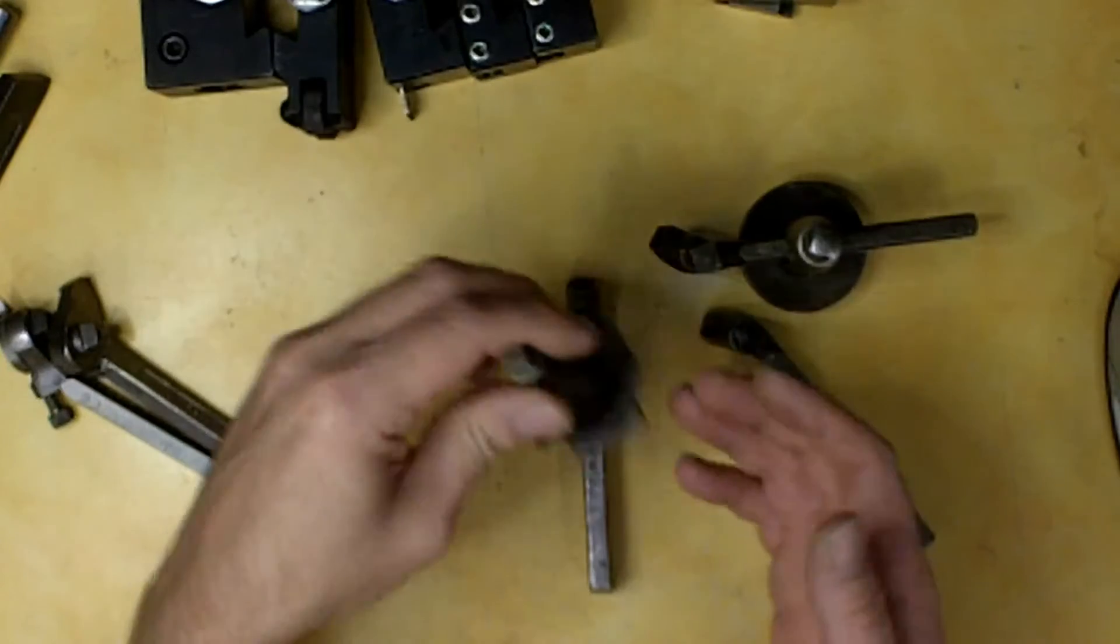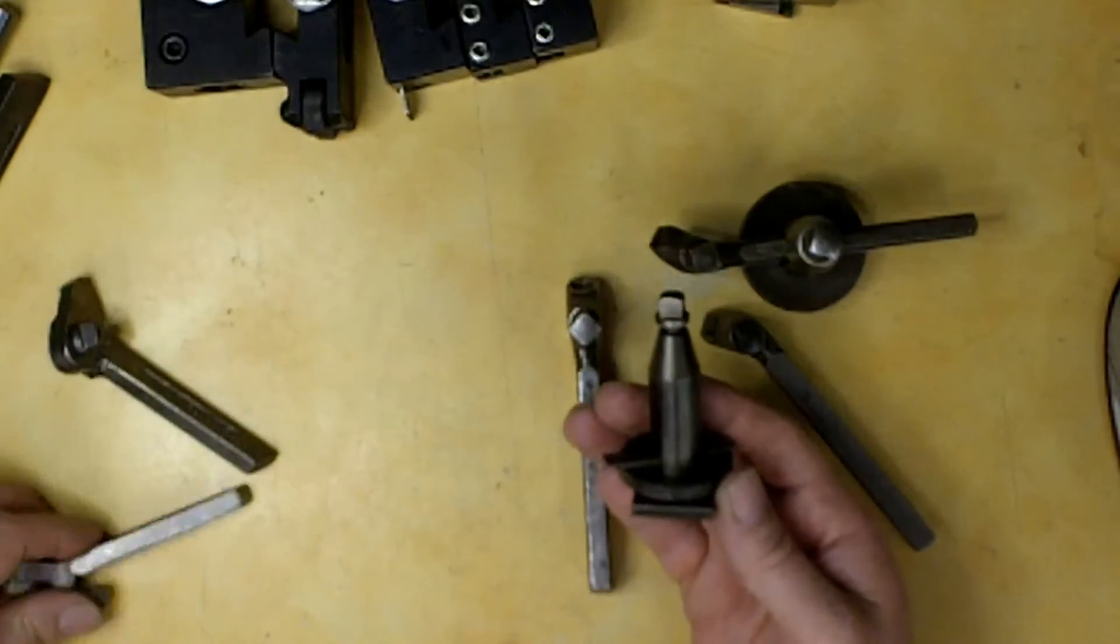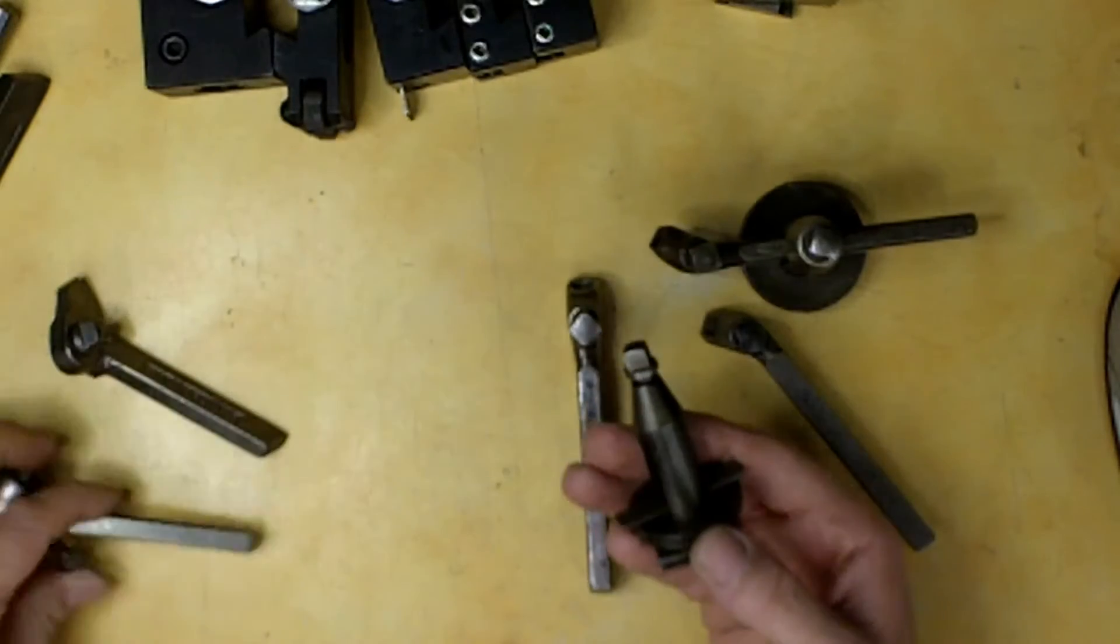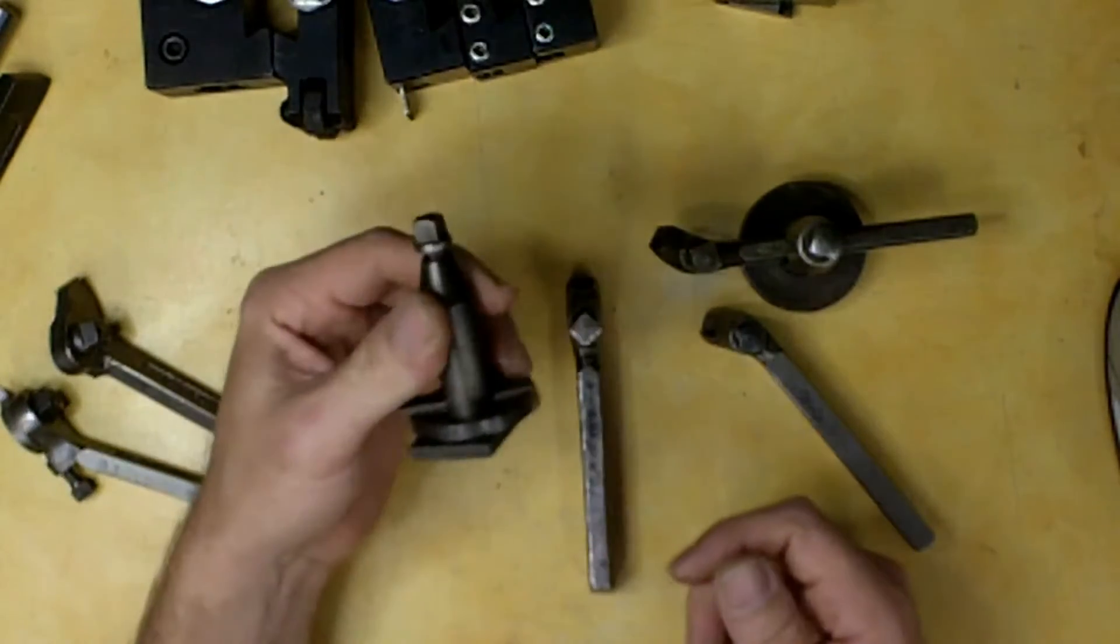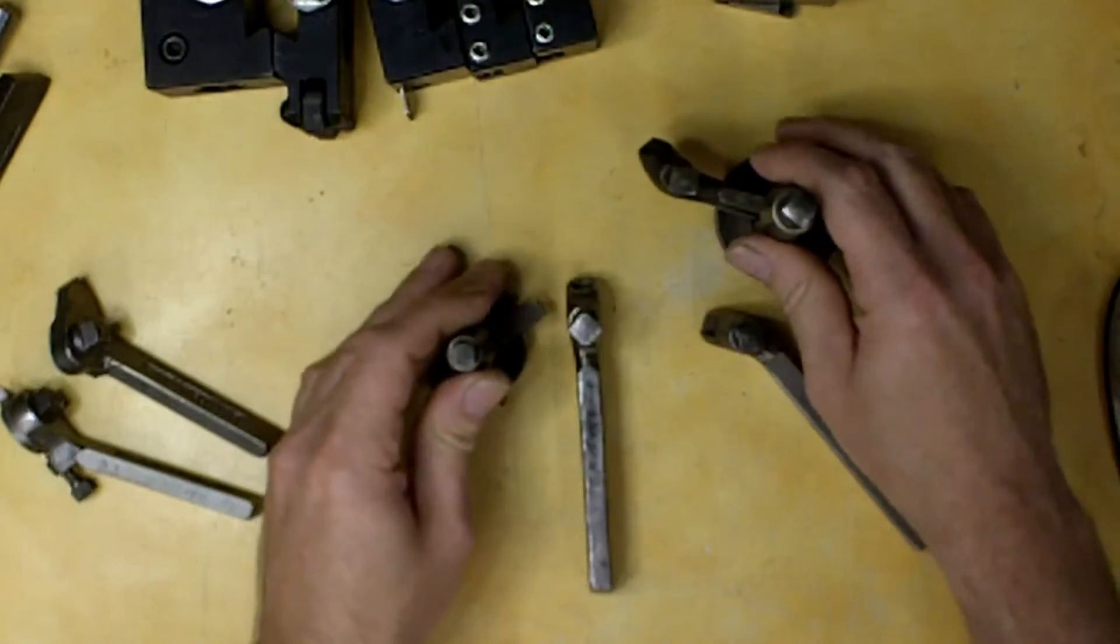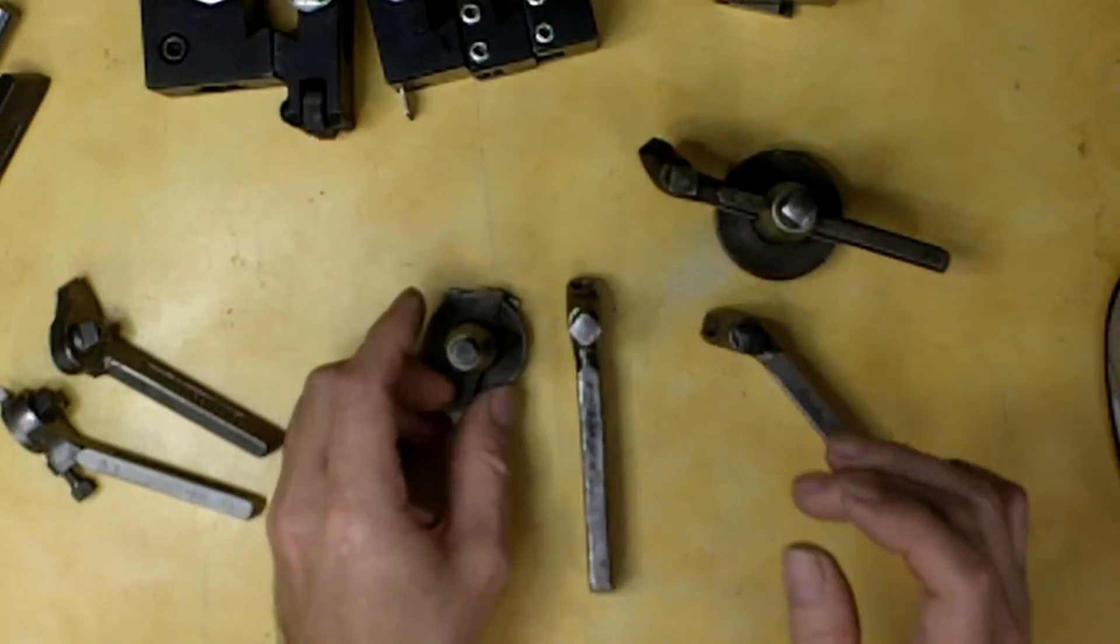And of course, this would hold smaller ones like this particular tool right here. It would work for this one. So that is really in a nutshell, the lantern style. I don't use these all that much. I've switched over to a quick change tool post and we'll get to that in a moment.